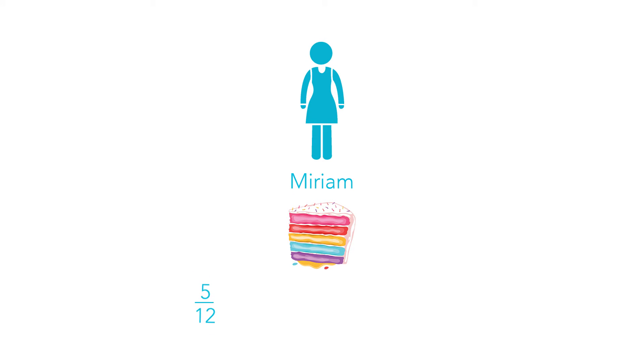Now see if you can compare these fractions to solve this puzzle. Miriam is offered 5/12 of a cake, 3/9 of a cake or 2/5 of a cake. Which option would give her the most cake?